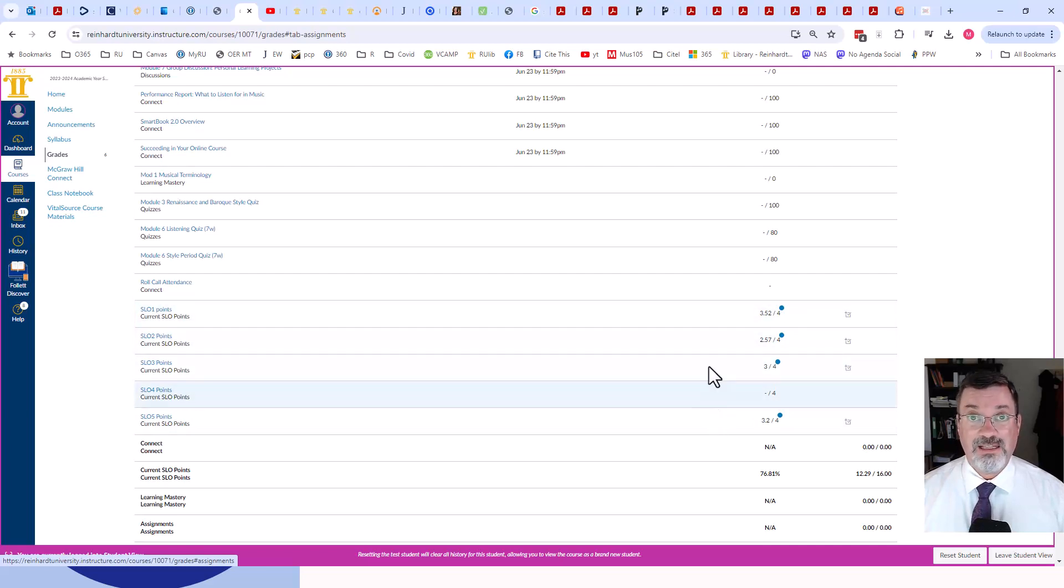If you get 3 for all 5 of these, you're getting an A. That's 15 points, I believe, is an A. It may be a B. 15 points may be a B. I'd have to check. But, I round these up to the nearest quarter of a point. So, 3.52 would actually round up to 3.75. 2.57 would round up to 2.75. 3 would not round anywhere. It'd just stay a 3. 3.2 would round up to 3.25.